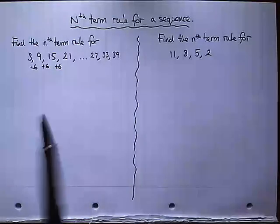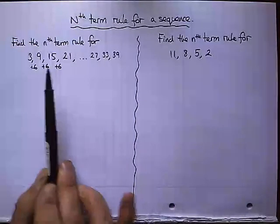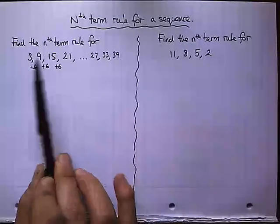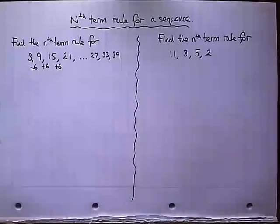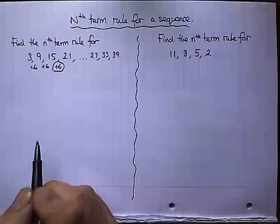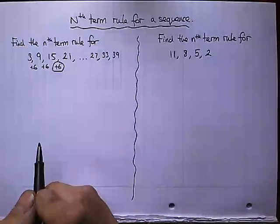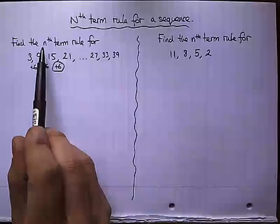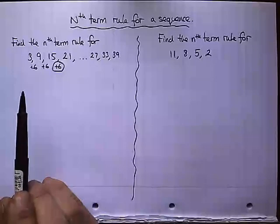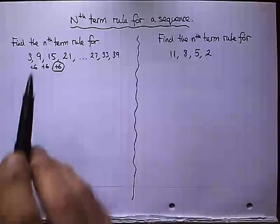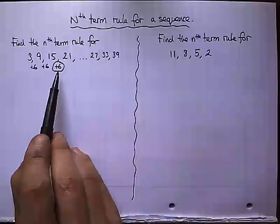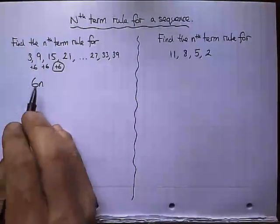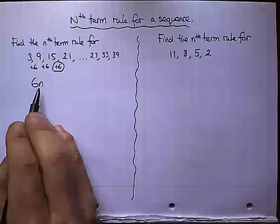So finding the next three terms is pretty straightforward. But to find a rule that goes from, well to find a particular rule for this sequence, we use this plus 6. And what we do is we use a bit of algebra. So because it's called the nth term rule, we use n. So it's 6 times n, whichever the term, the sequence number is.